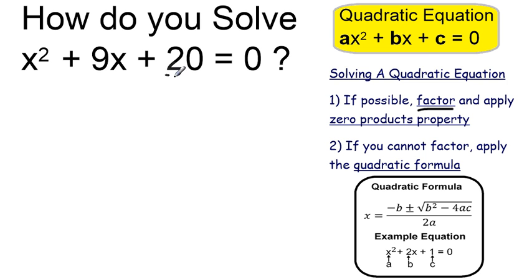When we're factoring a trinomial like this, we want to look at the constant term. Are there factors of 20? Numbers that multiply and give me 20, which also add to give me this term, to give me 9.